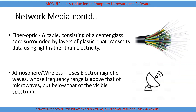Then we have fiber optics. As you can see in the diagram, it uses glass as a core surrounded by a layer of plastic, which is used to transmit data. Data is transmitted in terms of light rather than electricity. The other medium is wireless, which uses electromagnetic waves and microwaves as networking media.